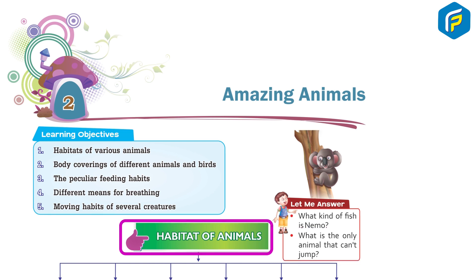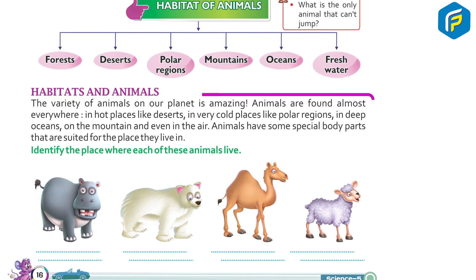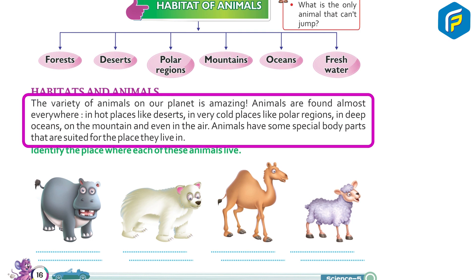Habitats of animals include forests, deserts, polar regions, mountains, oceans, and fresh water. The variety of animals on our planet is amazing. Animals are found almost everywhere — in hot places like deserts, in very cold places like polar regions, in deep oceans, on mountains, and even in the air. Animals have some special body parts that are suited for the place they live in.